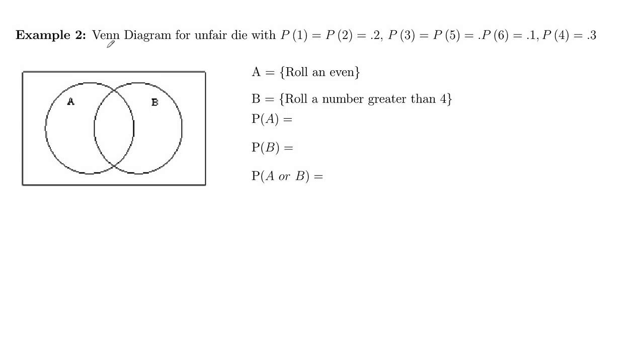In example two here, we're going to use a Venn diagram to help us solve this problem. We have an unfair die, so not equally likely outcomes, where probability of rolling a one and probability of rolling a two are two-tenths. Probability of rolling a three and five or six, those are all one-tenth, and probability of rolling a four is three-tenths.